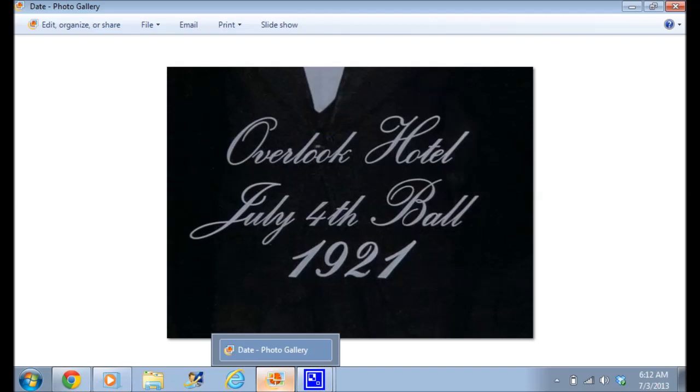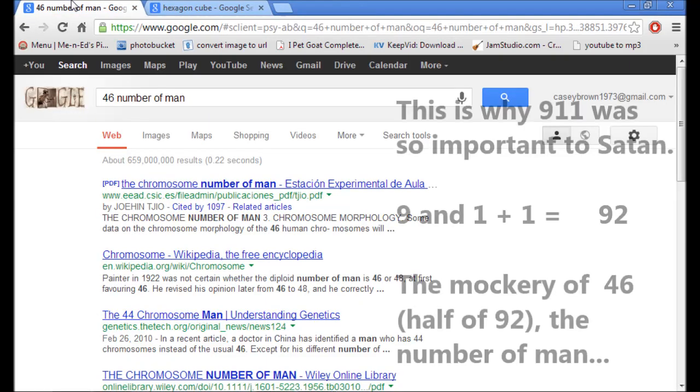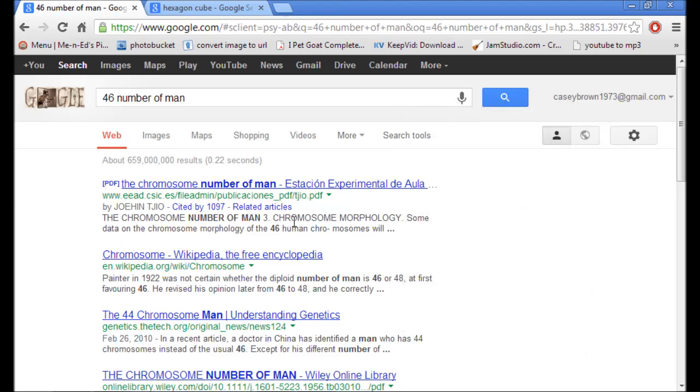46 is the number of man - 23 and 23 chromosomes. July 4th, 1921 equals 46. Again, the devil takes something of man that is perfect and good, and he doubles it, he reverses it, he does whatever he needs to do to make it his own.